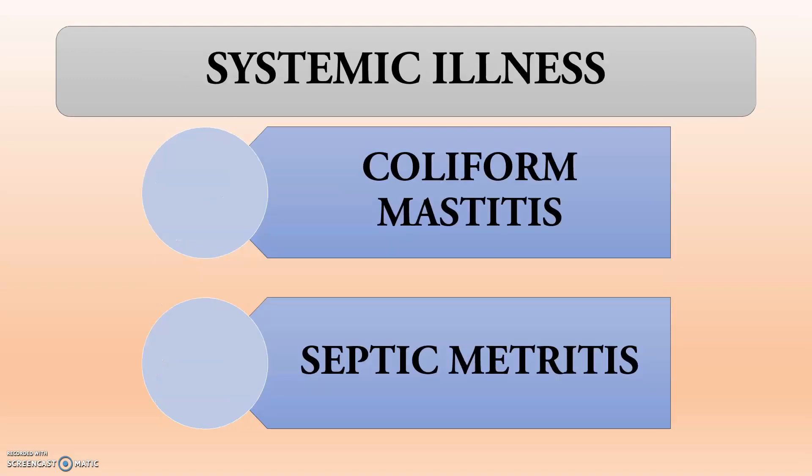Moving to the second differential — systemic illness — mainly coliform mastitis and septic metritis. Whenever the animal has coliform mastitis and septic metritis, the animal can go into a Downer state. In coliform mastitis, mainly due to the enterotoxins produced by gram-negative bacteria, they attack muscular cells and that can lead to muscular damage and ischemic necrosis.